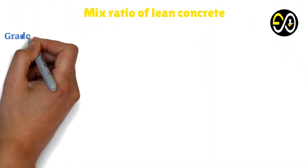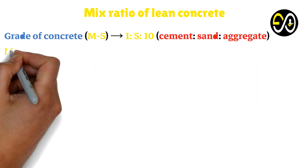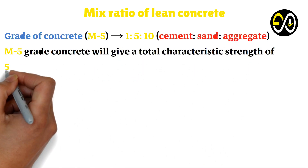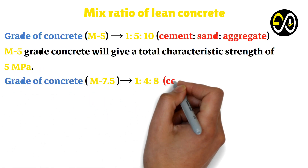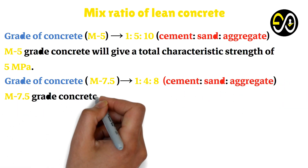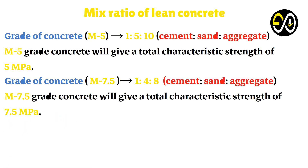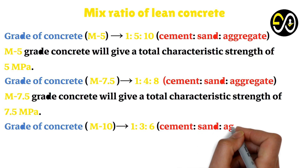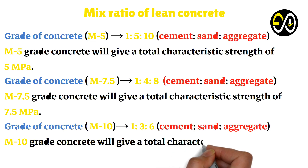Mix ratios of lean concrete — Grade M5 (1:5:10, cement:sand:aggregate) gives a characteristic compressive strength of 5 MPa. Grade M7.5 (1:4:8, cement:sand:aggregate) gives a characteristic compressive strength of 7.5 MPa. Grade M10 (1:3:6, cement:sand:aggregate) gives a characteristic compressive strength of 10 MPa.